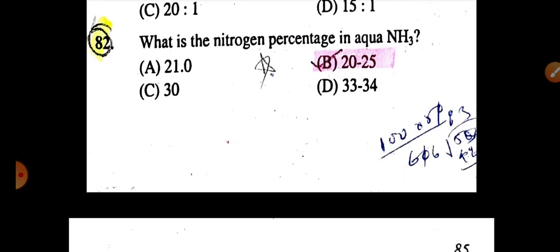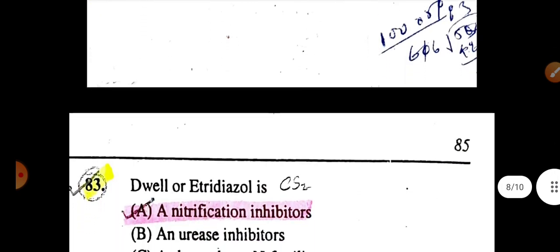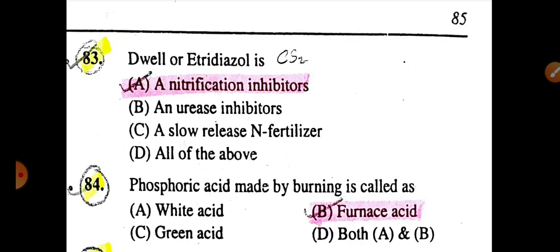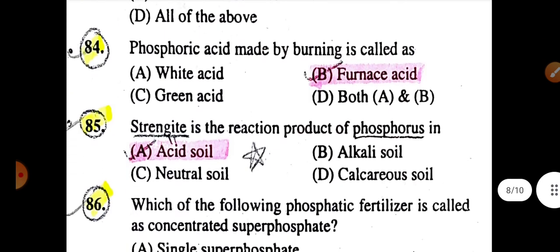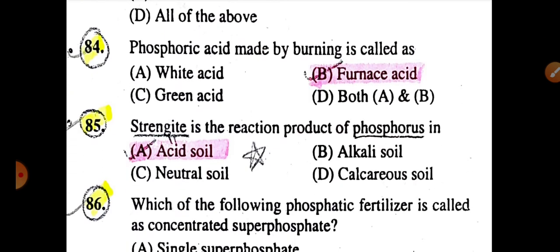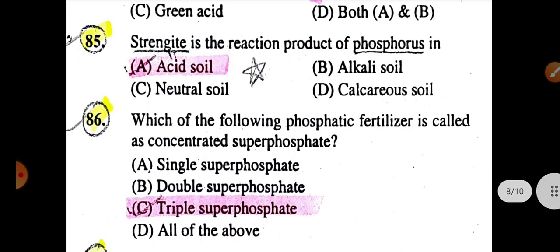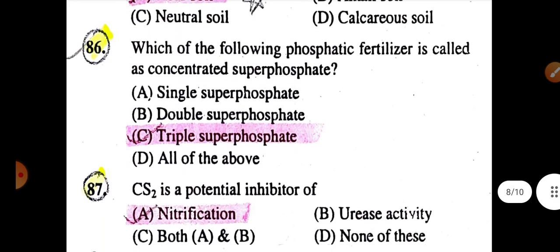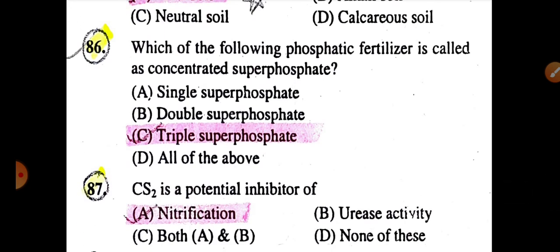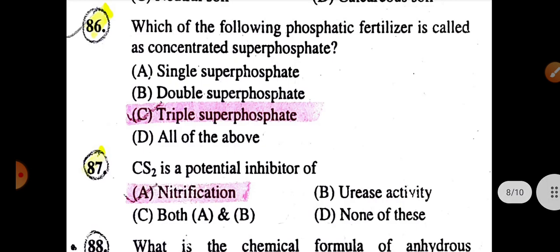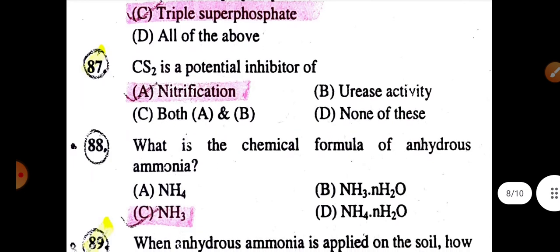What is the nitrogen percentage in aqua-ammonia is 20 to 25%. Dicyandiamide is a nitrification inhibitor. The phosphoric acid made by burning is called furnace acid. Struvite is a reaction product of phosphorus in acid soil. Which of the following phosphatic fertilizers is called superphosphate and concentrated superphosphate is triple-superphosphate.